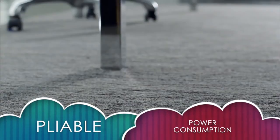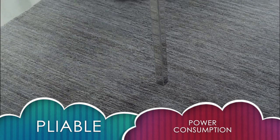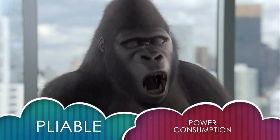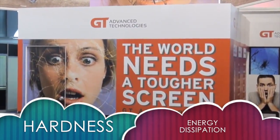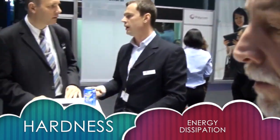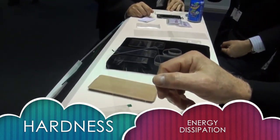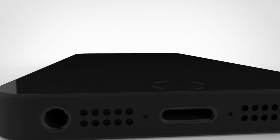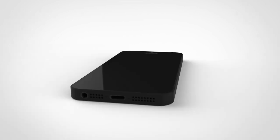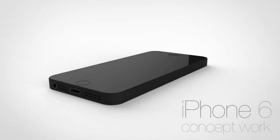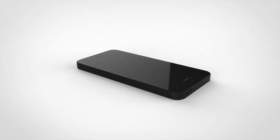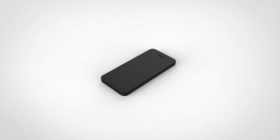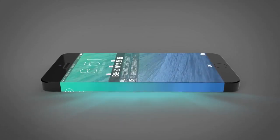In conclusion, the Gorilla Glass is pliable but power consumption. The sapphire is hardness but energy dissipation. In our impression, Apple always emphasizes the performance of its products, so it is more likely for Apple to use sapphire screen. However, Jobs has gone and we don't know Cook well. Let's wait and see what will happen this summer.